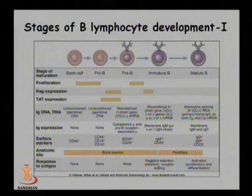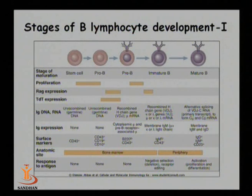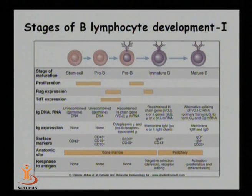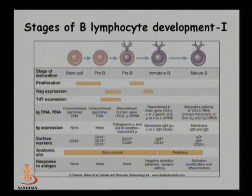Certain receptor markers such as CD43 and CD19 attach on the surface of B cells, and these cells are ready to become mature B cells in the future. Such B cells are known as progenitor B cells or pro-B cells. After synthesis of pro-B cells, certain heavy chains attach on the surface via VDJ joining, and this heavy-chain-containing B cell is known as a precursor B cell or pre-B cell.